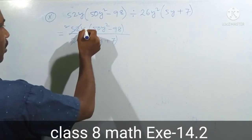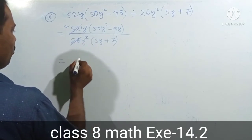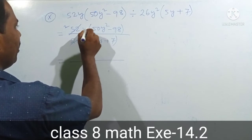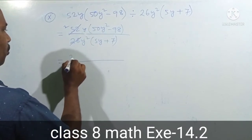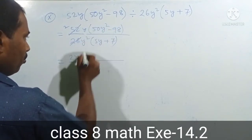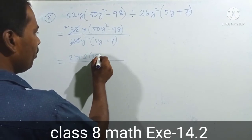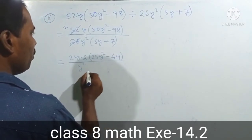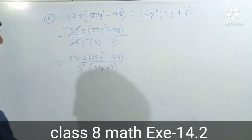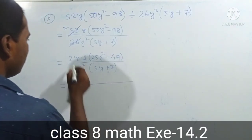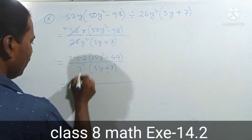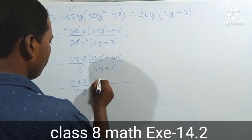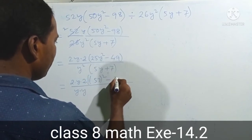We start by taking out common factors. 50 equals 2 common, and 2 common equals 25. Y squared minus 2 common equals 49. So y squared times 5y plus 7. Next step: 2 into y into 2. So we get 25y squared, and 5y whole square equals 5y squared, and 49 equals 7 squared.